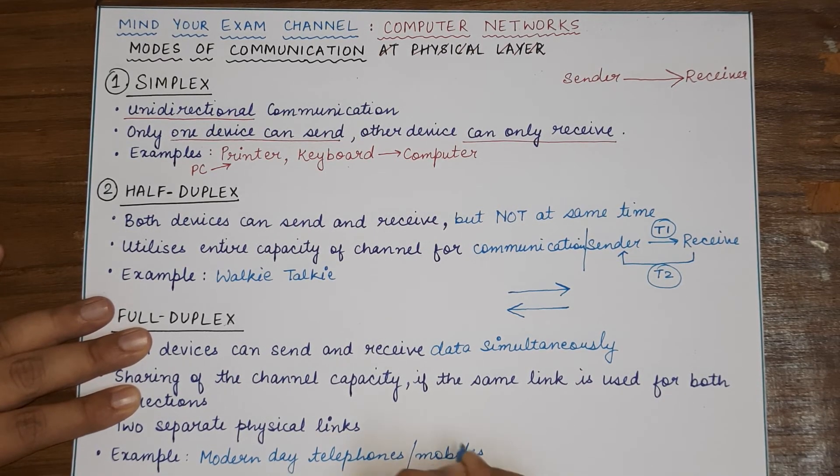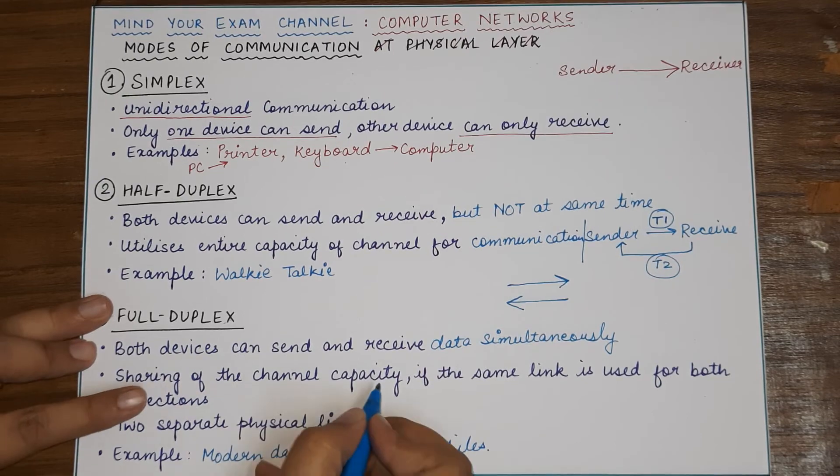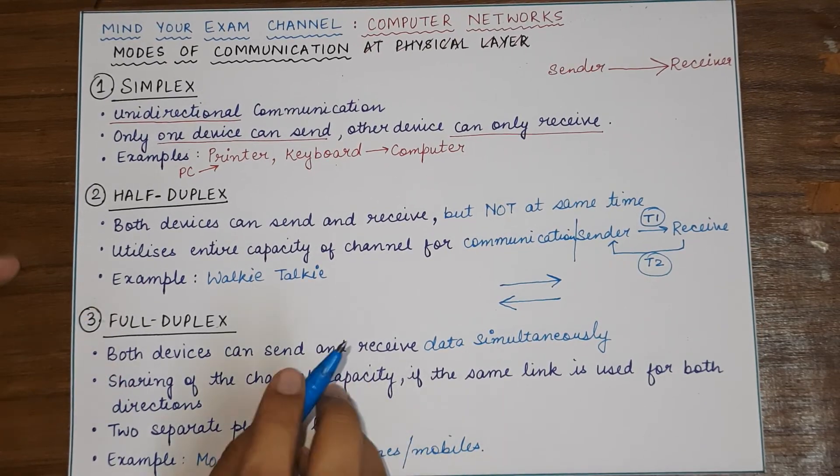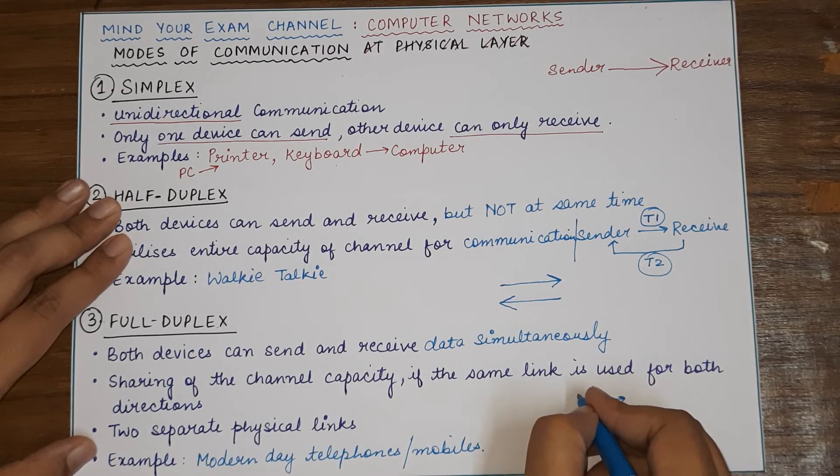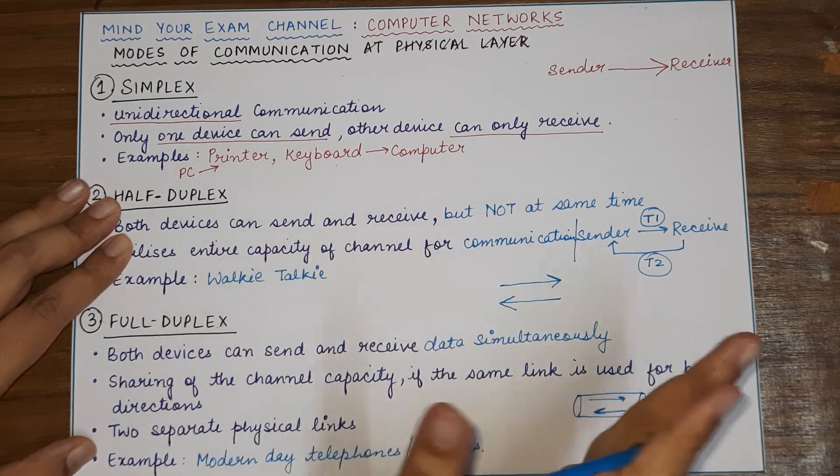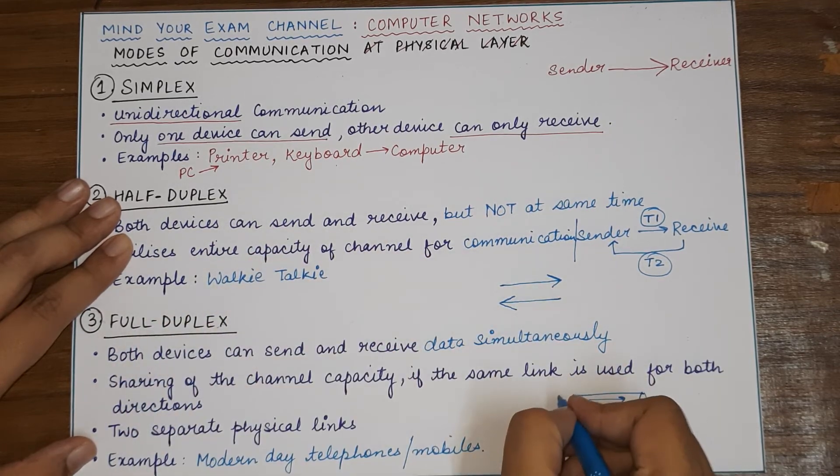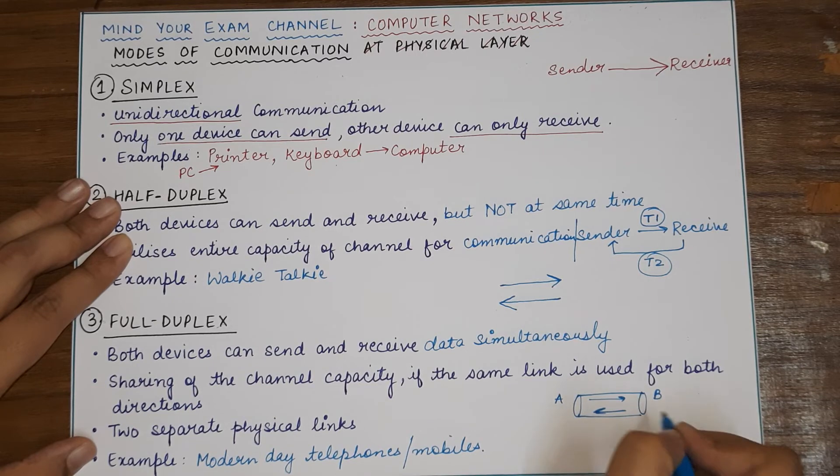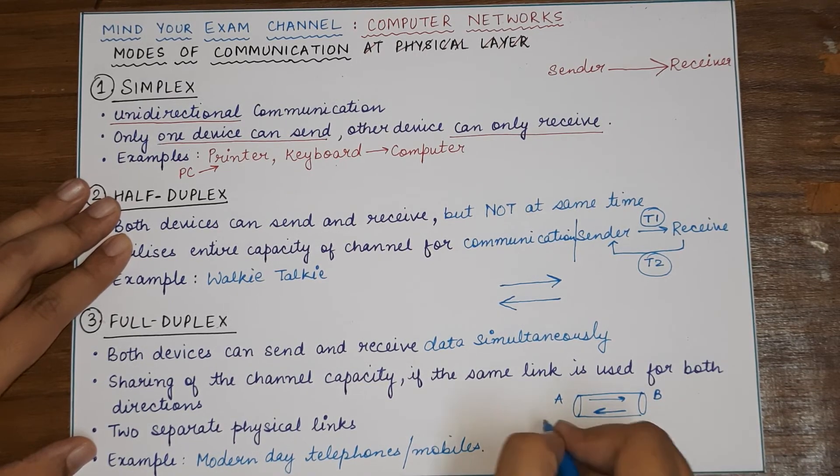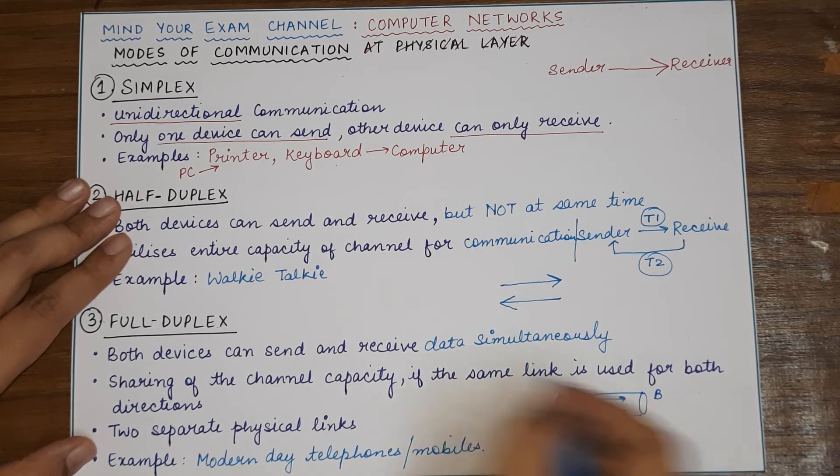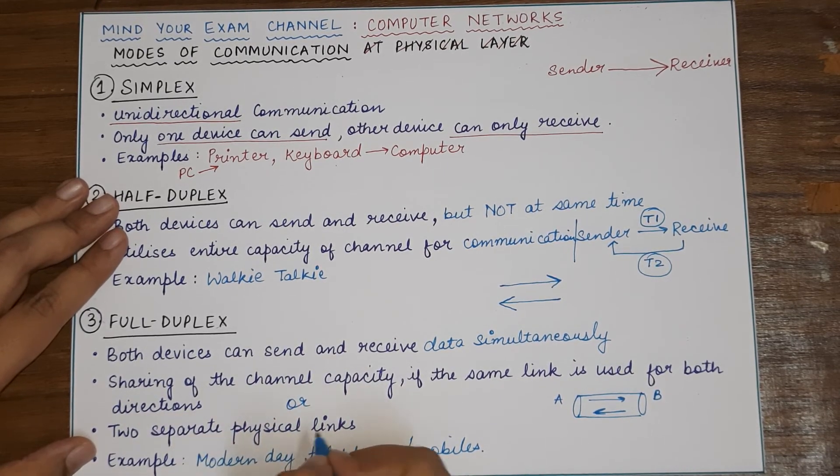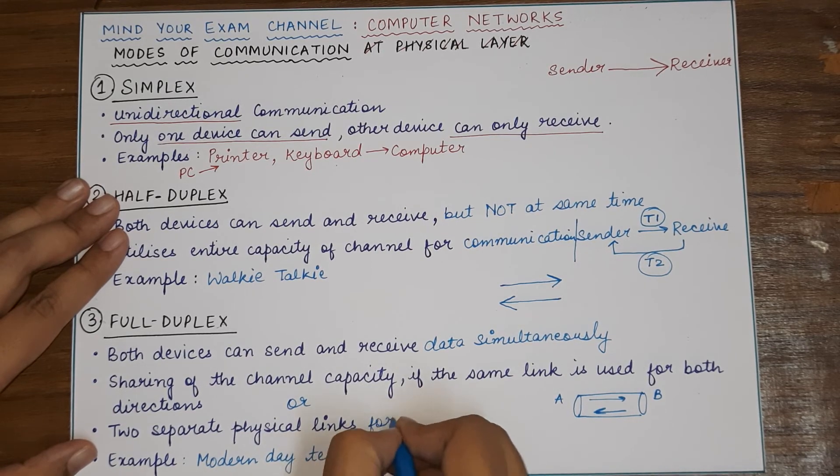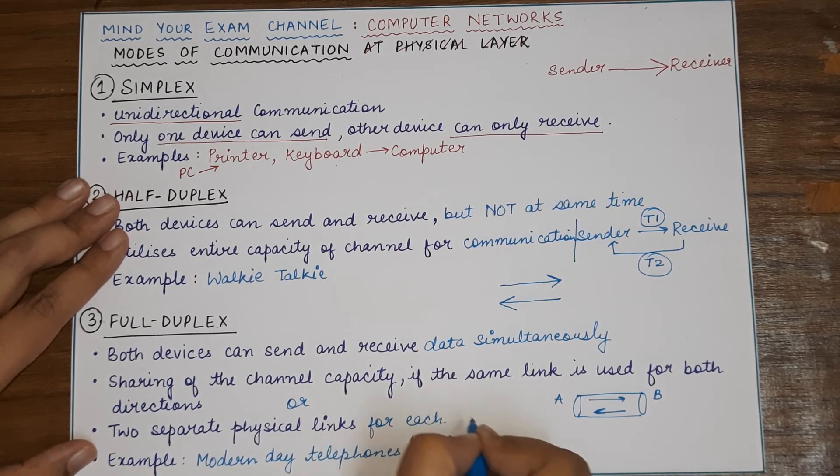Now, in case of full duplex, the channel capacity can either be shared because both the communication has to take place in one channel in both the directions. So, half capacity can be reserved from point A to point B and the other half can be reserved for the direction from B to A. Or the second alternative is using of separate physical links for each direction of communication.